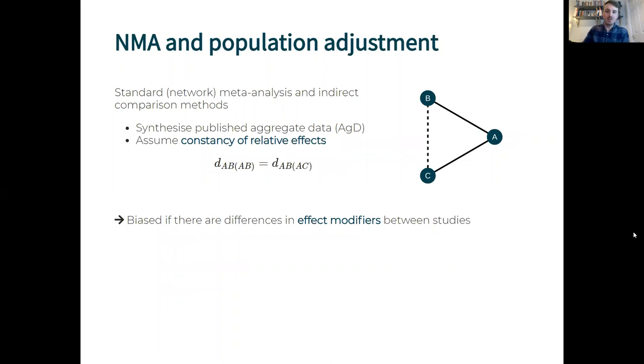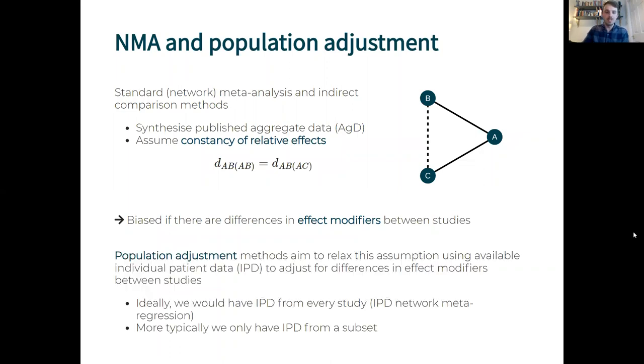This assumption breaks down and we incur bias if there are differences in effect modifiers between studies. Population adjustment methods aim to relax this assumption using available individual patient data or IPD to adjust for differences in effect modifiers between studies.